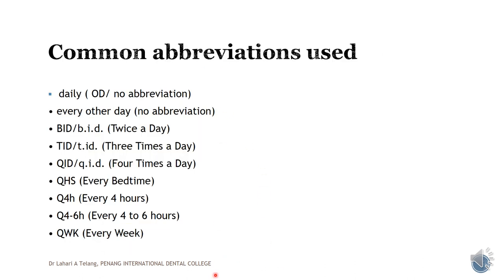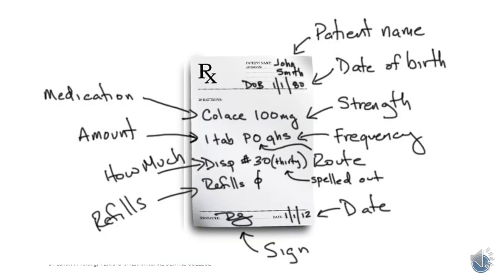Common abbreviations used in prescriptions include OD for daily, BD, TDS for three times a day, QID, and others. This is just an example of how a prescription should look and what important things to highlight: name, date of birth, strength of medication, frequency, route of administration, quantity in words if numbers are unclear, the date, doctor's signature, refills, and the name of the medication.